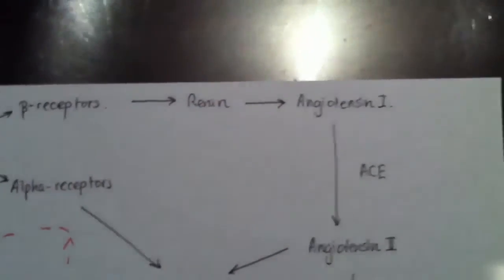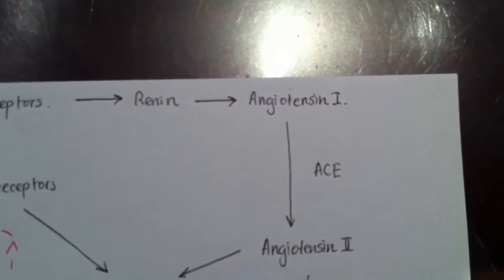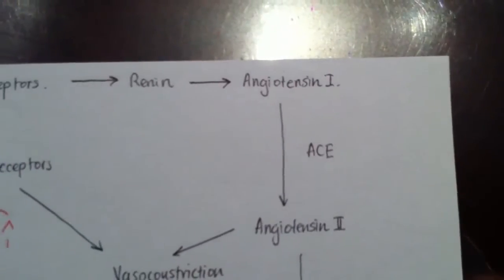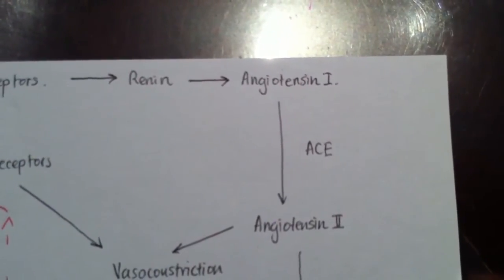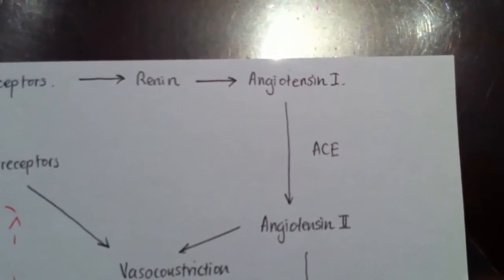it causes the release of renin, and renin helps to convert angiotensinogen to angiotensin 1. Angiotensin 1 is then converted to angiotensin 2 using, through ACE inhibitors in the lungs, ACE angiotensin converting enzymes in the lungs.